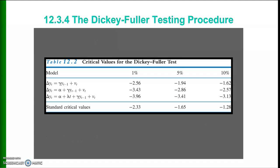These are the critical values for the Dickey-Fuller test. For no constant and no trend, the critical value at the one percent level of significance is minus 2.56. With a constant it is minus 3.43, and with both constant and trend the critical value at the one percent level is minus 3.96. The standard critical values are: minus 2.33 at one percent, minus 1.65 at five percent, and minus 1.28 at ten percent.